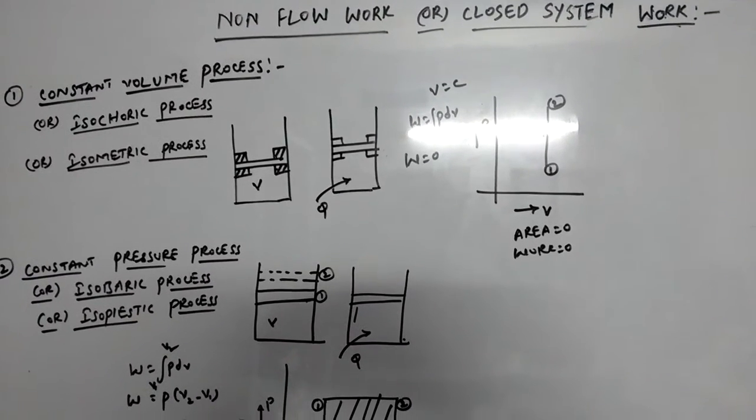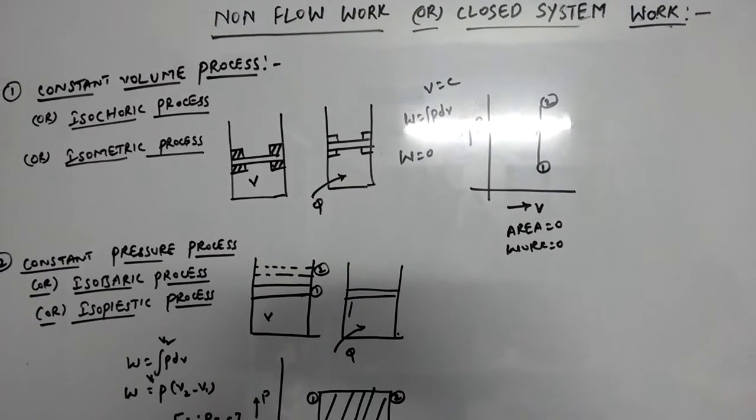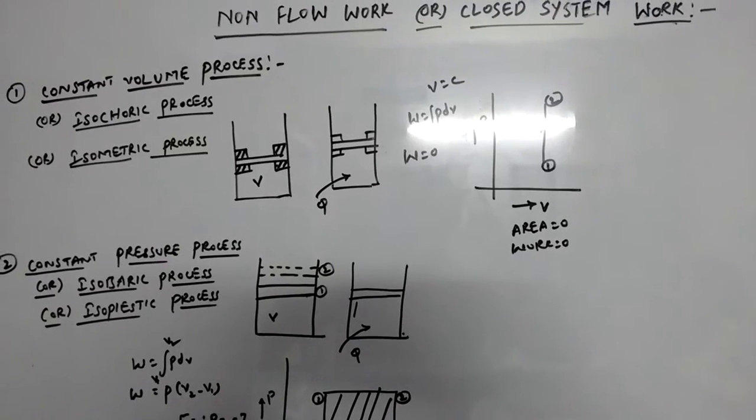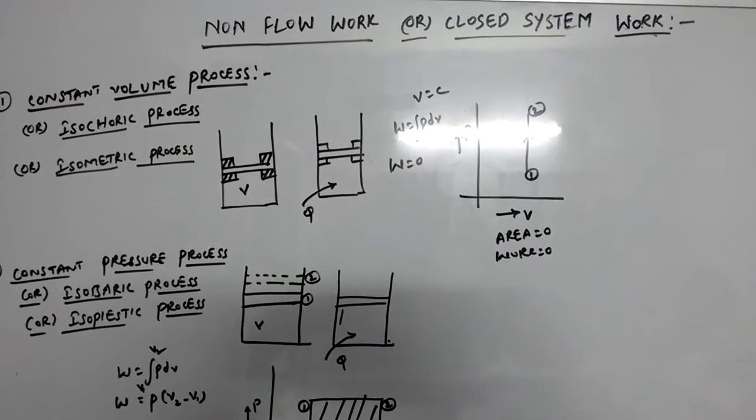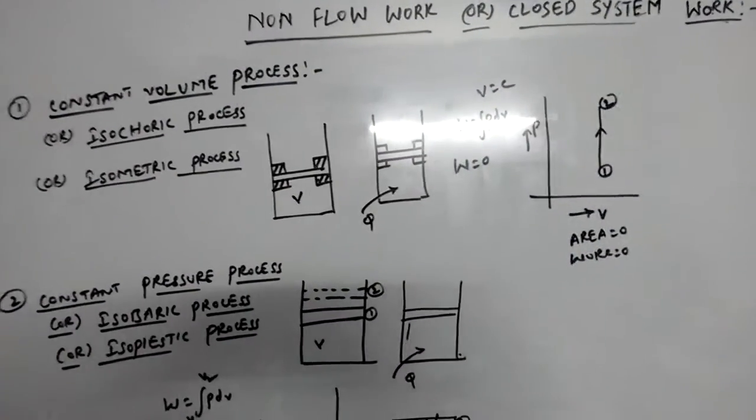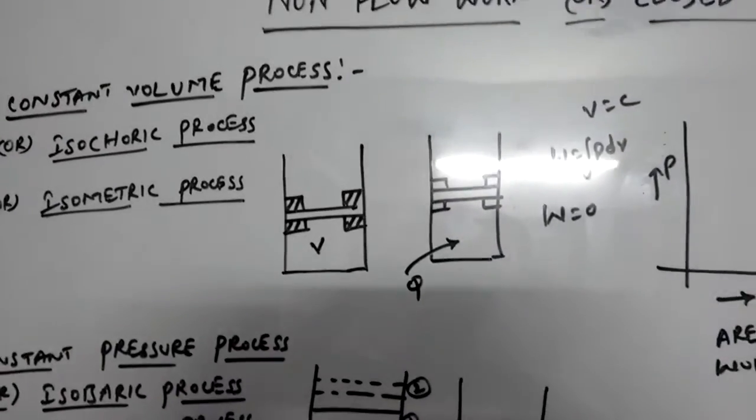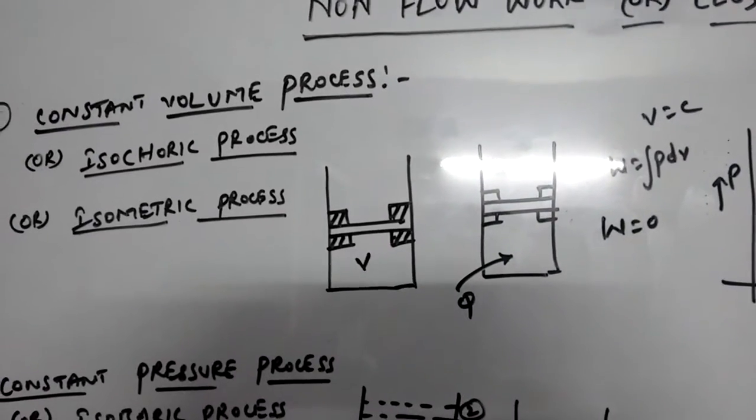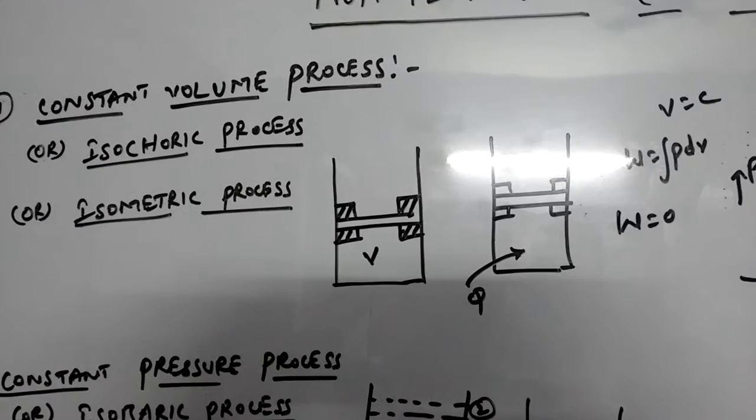We are going to find out the non-flow work for various processes: constant volume process and constant pressure process. Now have a look at the constant volume process. This constant volume process is also known as isochoric process or isometric process.